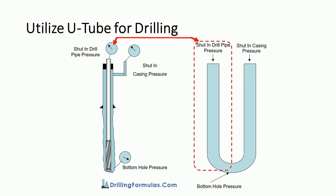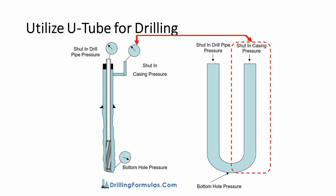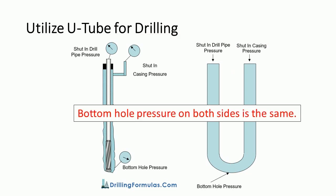And the other side is the annulus, which is the area between the wellbore and the string of pipe. This diagram demonstrates the U-tube in our drilling business. As you can see in this diagram, one side represents the column of fluid on the drill pipe side, and the other side represents the annulus. Bottom hole pressure on both sides is the same.